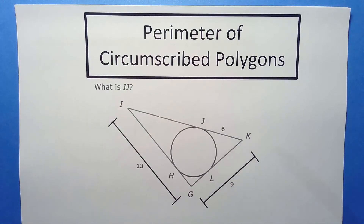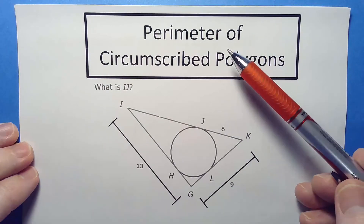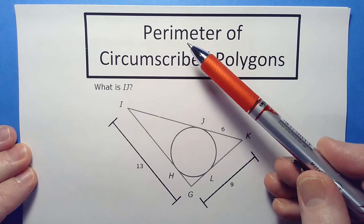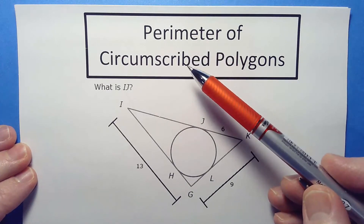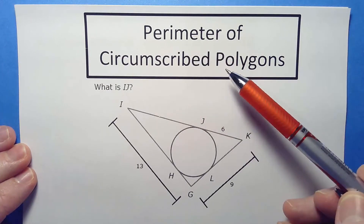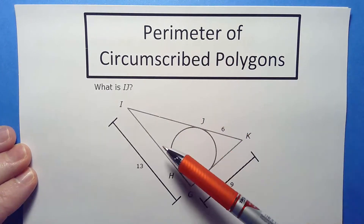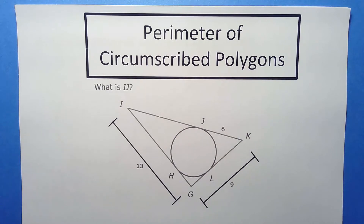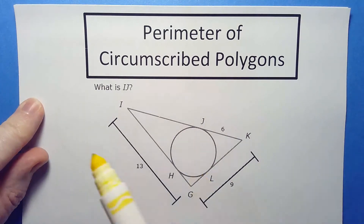Today we're going to build on what we've done previously with tangents, and we're going to find the perimeters of circumscribed polygons — polygons that go around circles. Let's take a quick look at what we're trying to do.